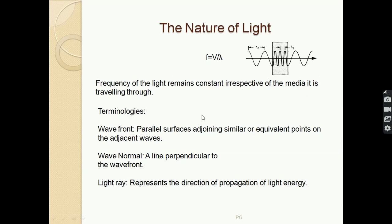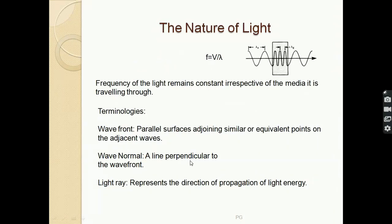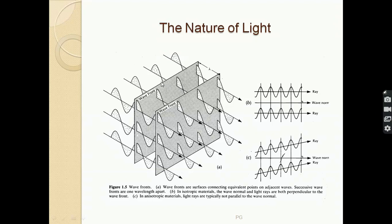Moving on, let me introduce some of the terminologies related to the wave nature of light that are wave front, wave normal, and light ray. So what is the wave front? Wave front is parallel surfaces adjoining similar or equivalent points on the adjacent waves. Here we can see light is not a single wave, it is composed of several waves coming out of the source. Here we can see these are some of the light waves, and if we join the equivalent similar points on the adjacent waves like these points, we get a plane. This plane is called wave front. What is wave normal? Wave normal is the line perpendicular to the wave front. So if these are wave fronts, like it is represented here as these lines, the perpendicular to this plane is the wave normal. And the light ray...